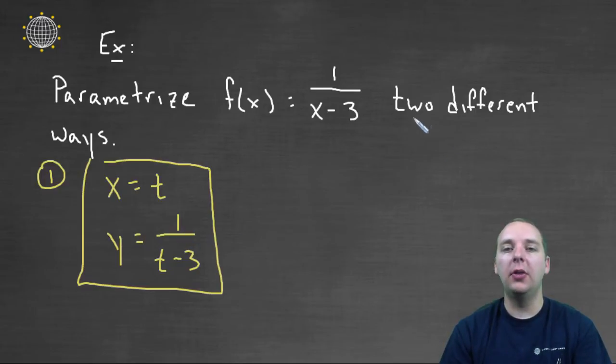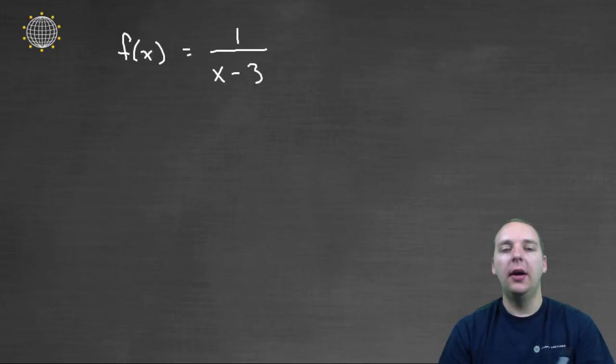But now we have to come up with another one because they asked us for two parametrizations. So for the second one, just choose something else to be your x. It could be anything. x may not be t, but you can let it be 2t or 5t or negative t, or let's do something like t plus five. That's okay.